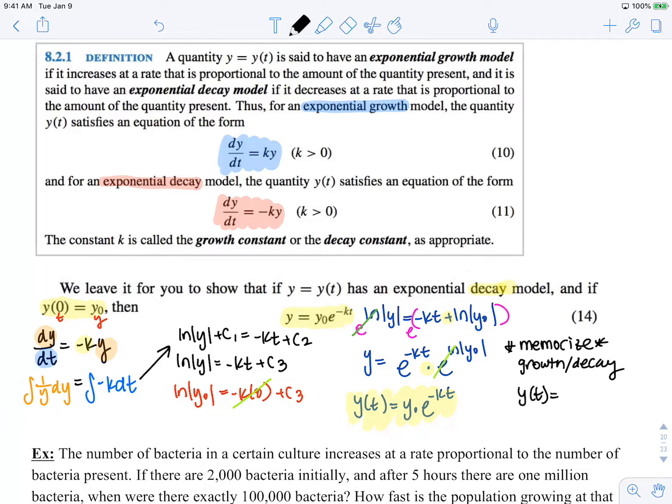we can memorize that whenever we have exponential growth or decay, y of t is going to equal y0 e to the kt. Make sure that looks like y0 e to the kt. k can be positive or negative depending on whether it's growth or decay.